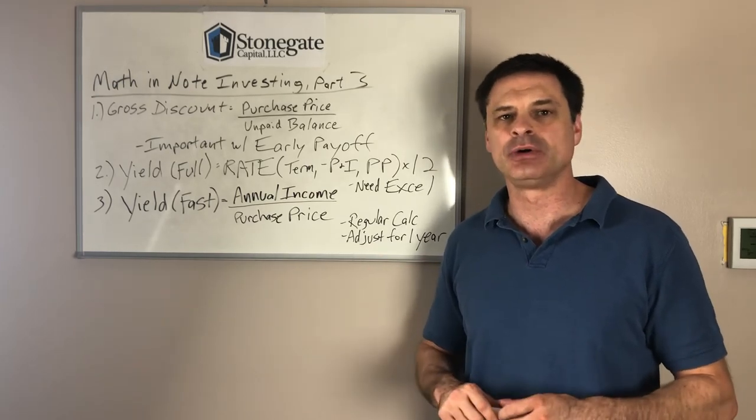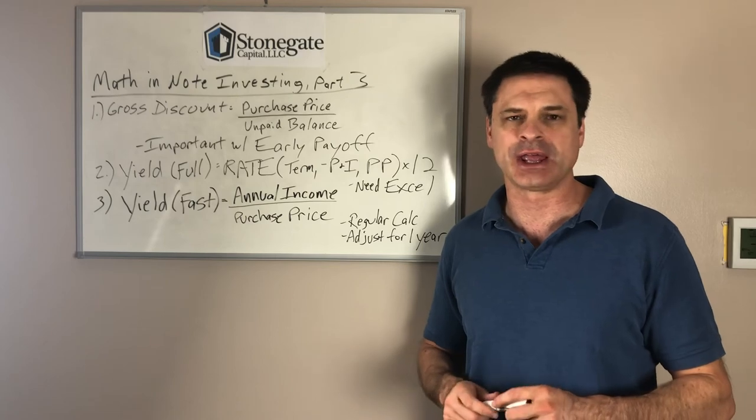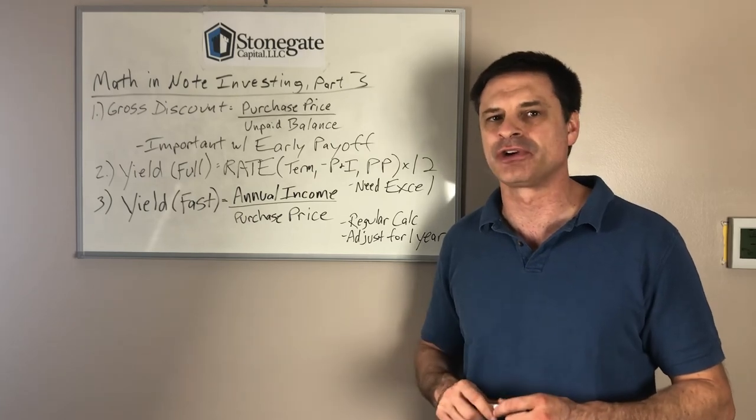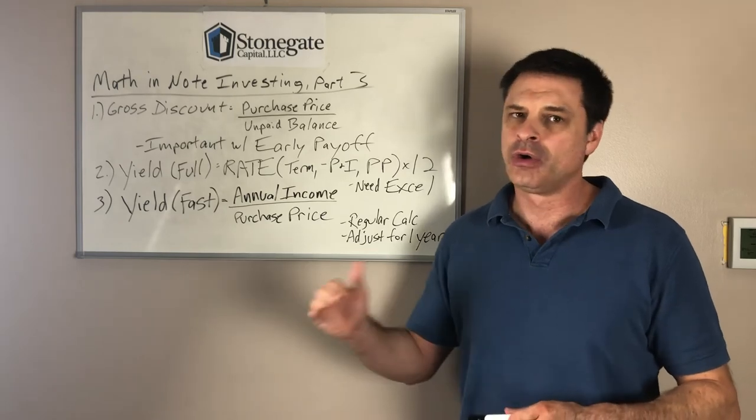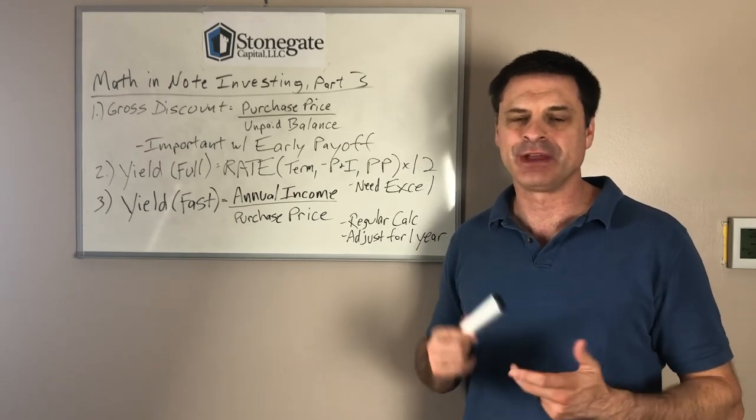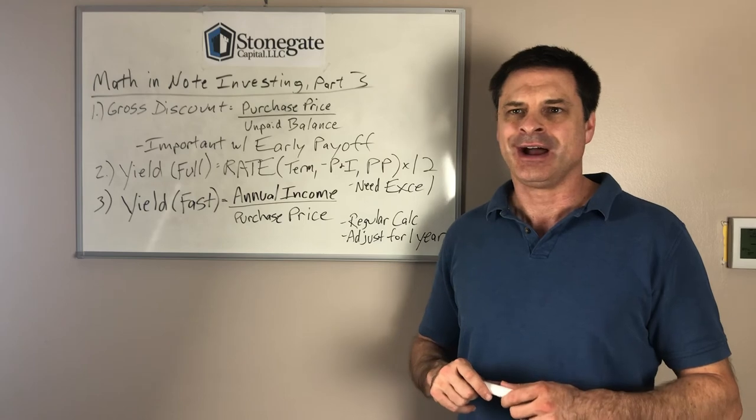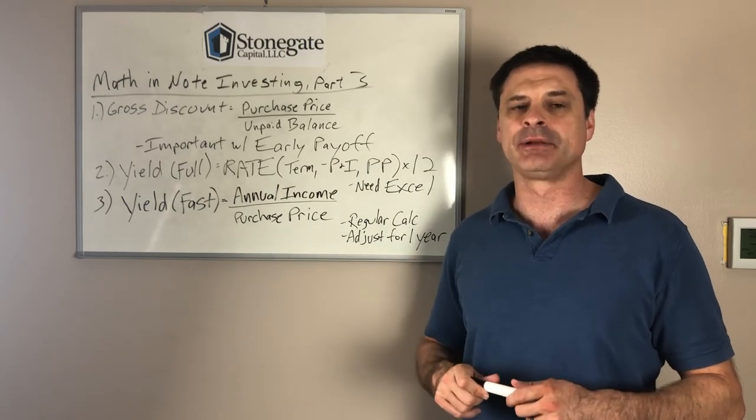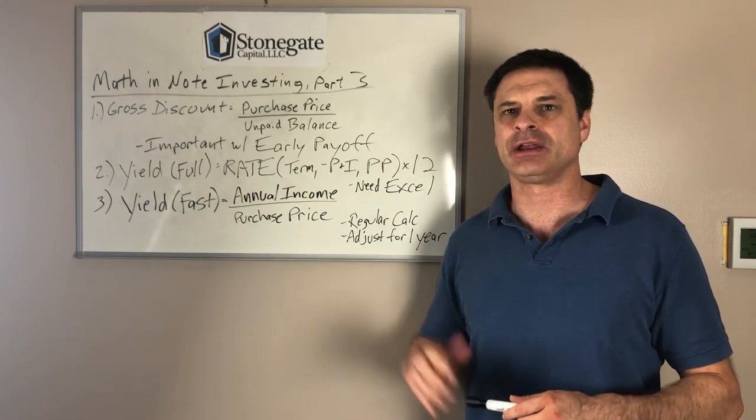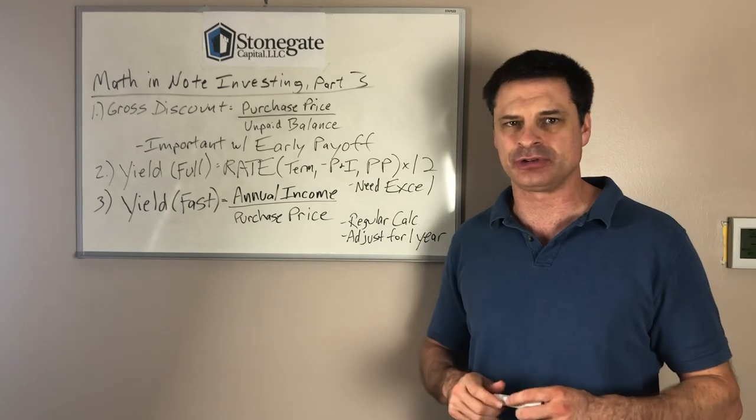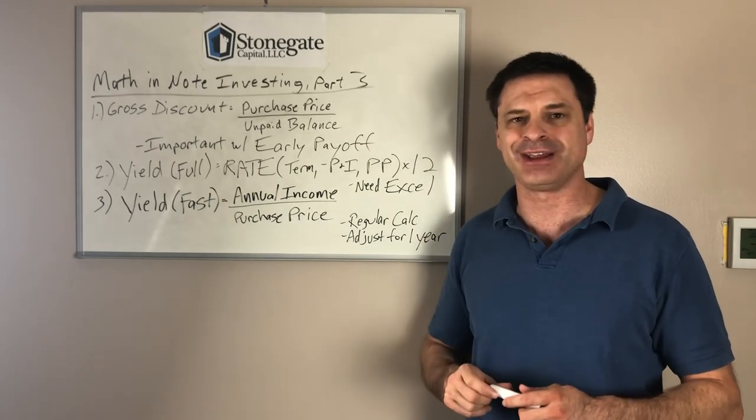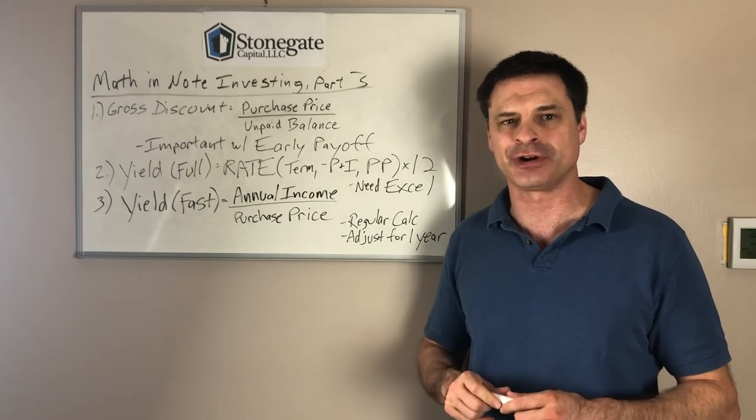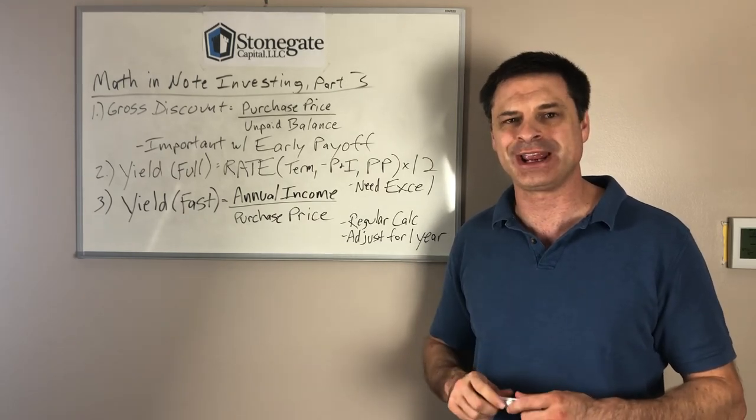Or say it's a performing note, and they are either late, or maybe they miss one month, for example. Same token, that will decrease that. Or the opposite can be true. If you have a note investor that wants to pay off their note a little bit early and say they make a half payment every two weeks, over time, that will increase the amount of payment in that first year, which will increase your return even more.